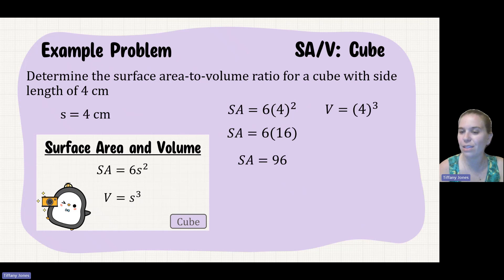My volume is gonna be four cubed, so four cubed is gonna give me 64, so 96 divided by 64 is 1.5.